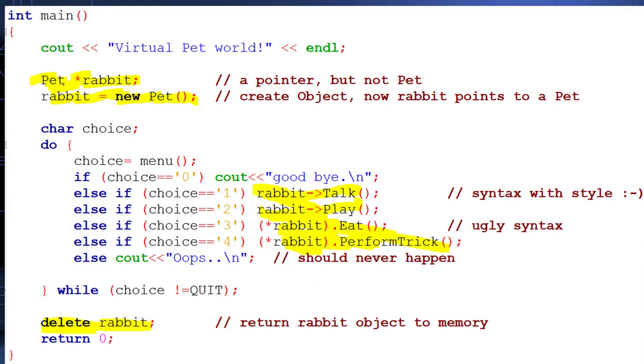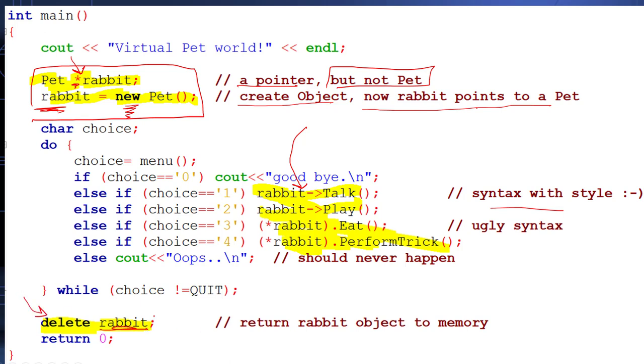This is another version of it. This is an educational class. This says I don't have a rabbit, I have a pointer to a rabbit. So I have no rabbit, a pointer but not a rabbit. When I say new, new will go out create an object, call the constructor, and now I will have a rabbit but I'm pointing to a rabbit. That's what this syntax means, the syntax with style and the ugly syntax. I'm pointing to a rabbit and when I'm done I return the memory to the system.